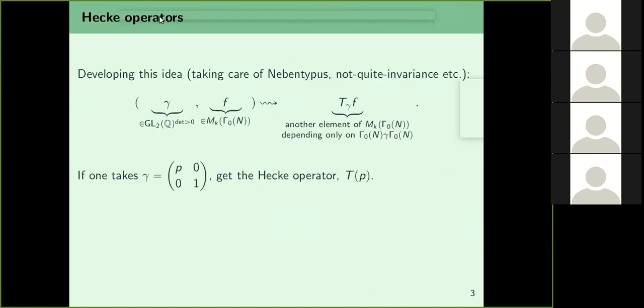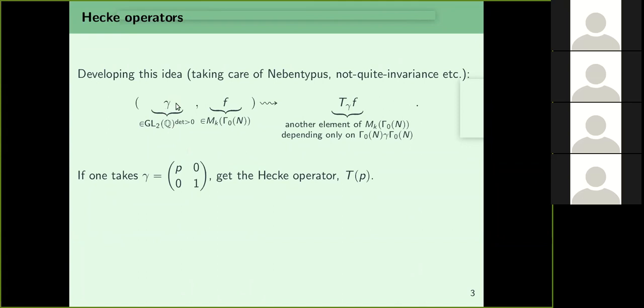One can make this idea precise: given any element of GL₂(ℚ) with positive determinant, you can make it act on M_k(Γ₀(N)) — not in a group-theoretic fashion, but by translating by Γ and accounting for the transformation property — and then averaging to get another element of M_k(Γ₀(N)). For the particular choice γ = (p, 0; 0, 1), what you get is the Hecke operator.